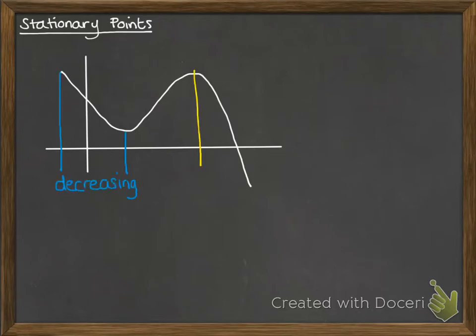So this portion here, let me just take that back a little, you've got this section of the graph is called decreasing because it's going down, the gradient is negative.